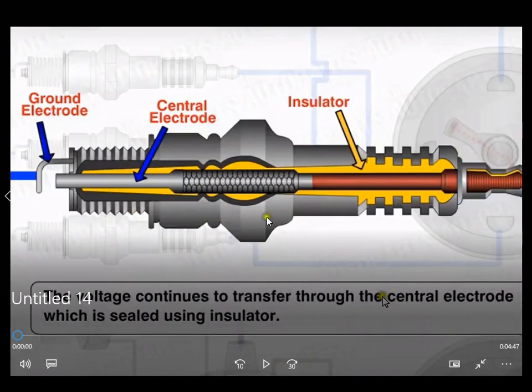This is a spark plug. This is insulator here yellow color and center electrode. This is the main electrode.